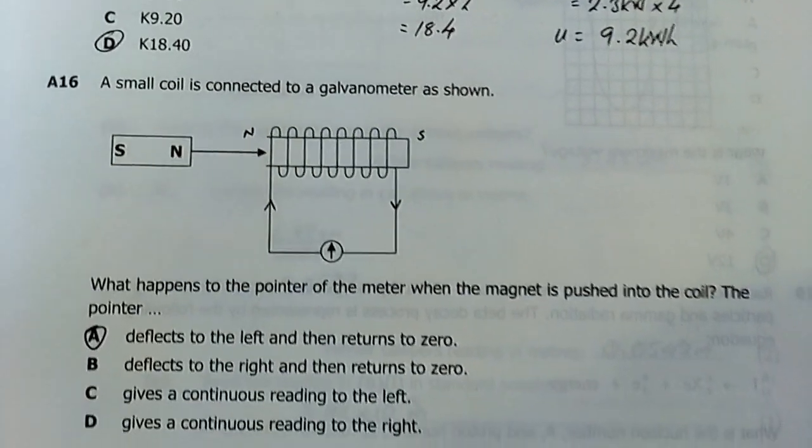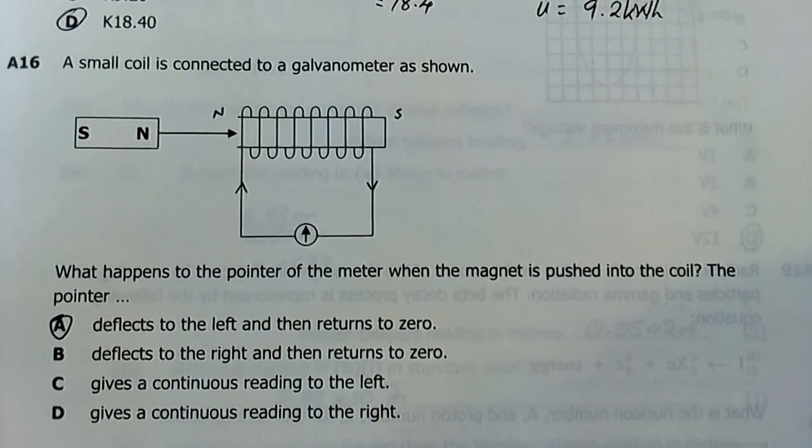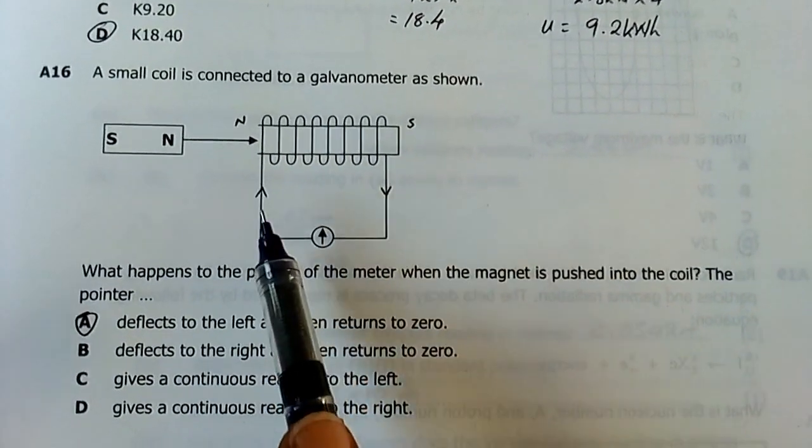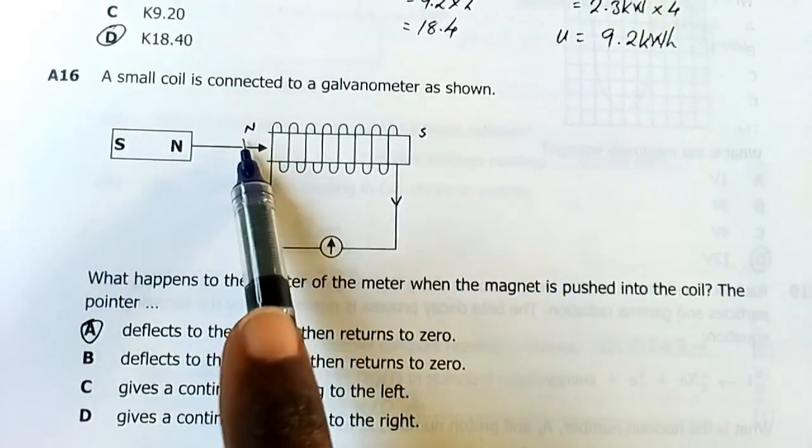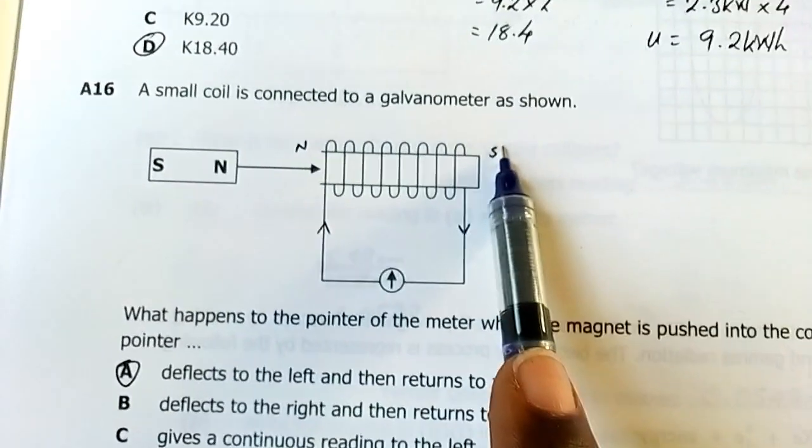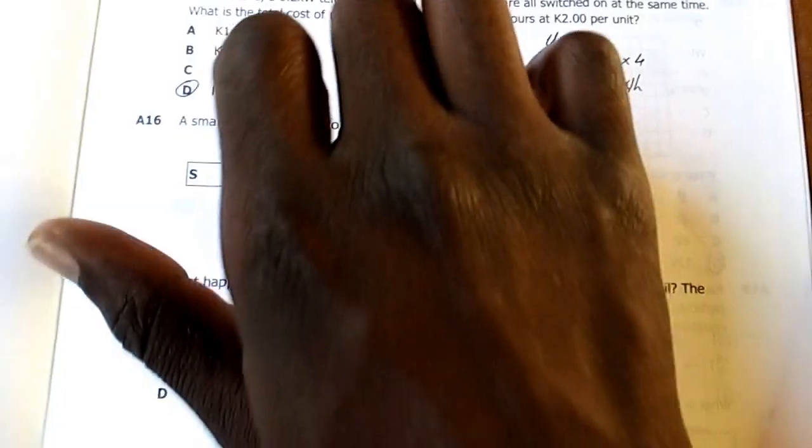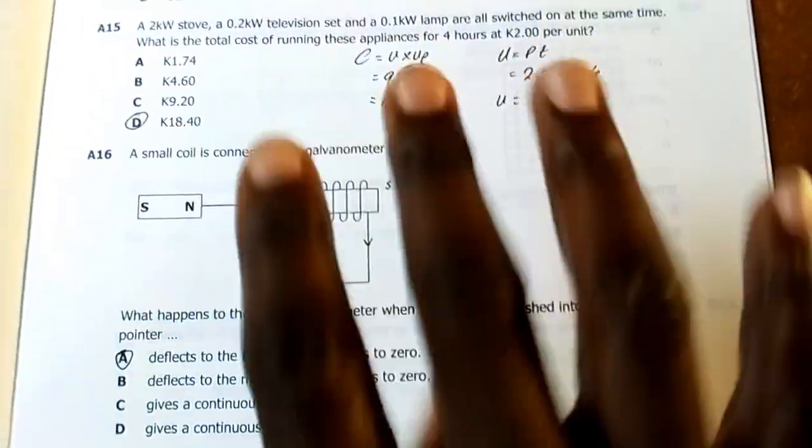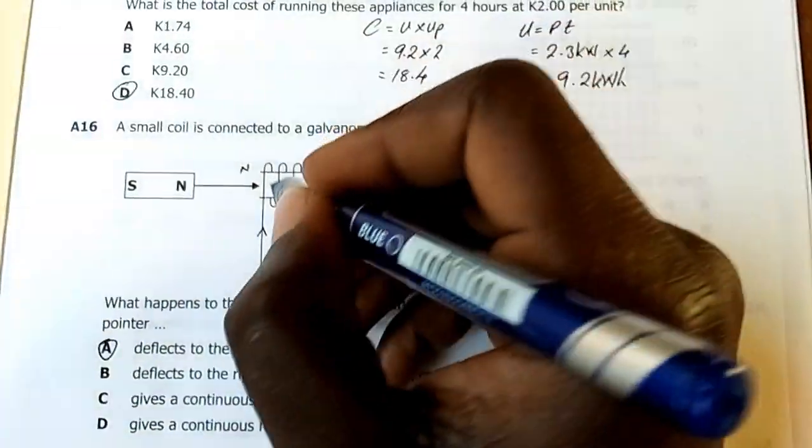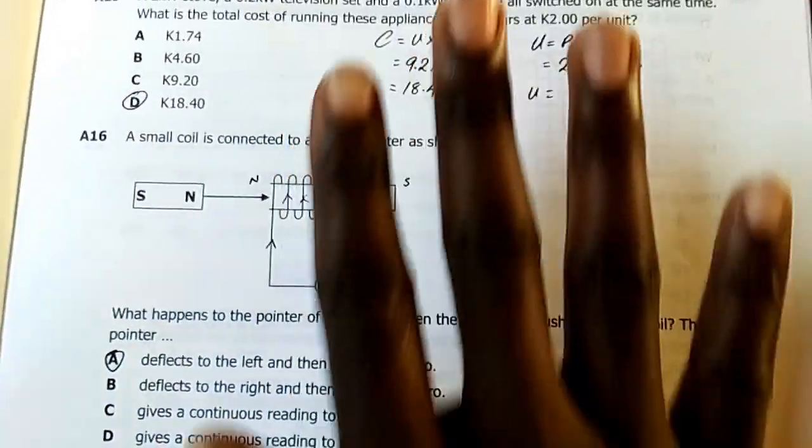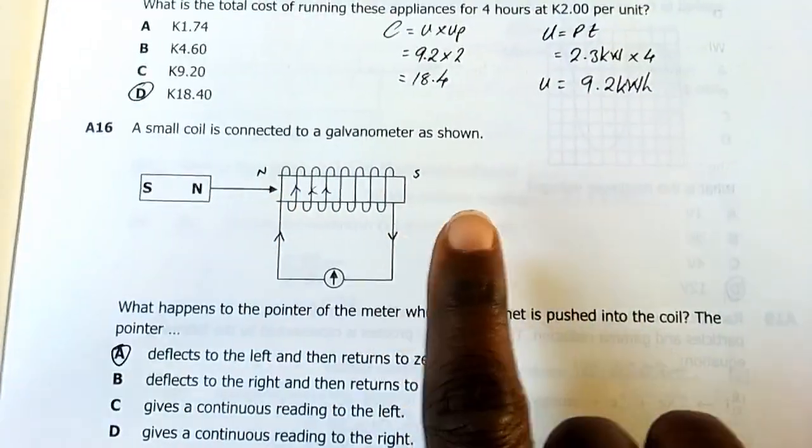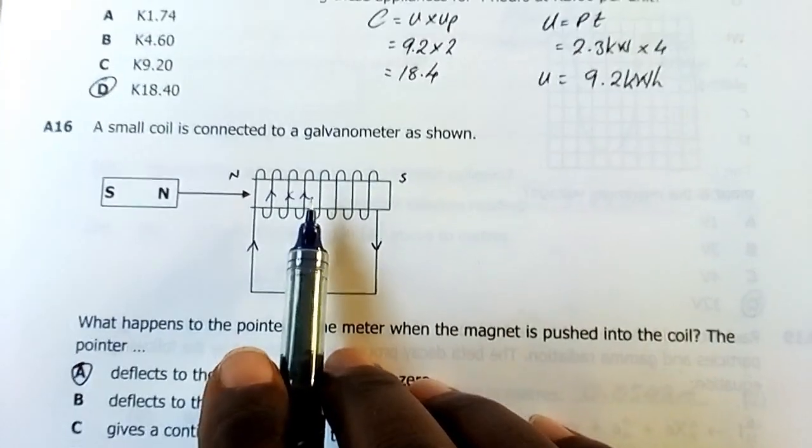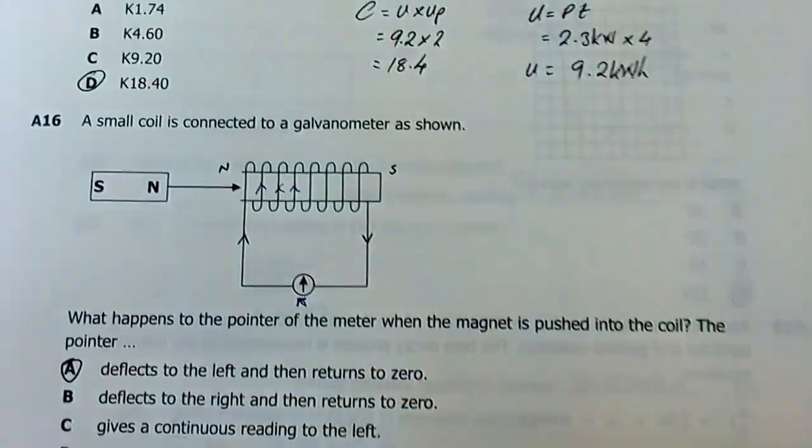Number 16: A small coil is connected to a galvanometer as shown. What happens to the pointer on the meter when the magnet is pushed into the coil? The pointer deflects to the left and then returns to zero. They have said the magnet is pushed in. The approaching pole creates a pole similar to it, meaning the other side will develop a pole which is opposite. From there you can use your right hand grip to determine the direction of current. Where your thumb points is the north, then these other fingers are pointing the direction of current in the solenoid. Current here is going upwards. If it's going upwards then the galvanometer will deflect to the left in the direction of current. Once the magnet is in here and it's no longer moving, the galvanometer will come back to its position. My answer is A.